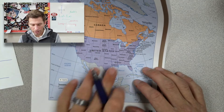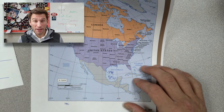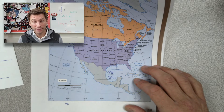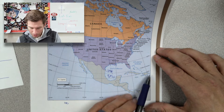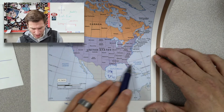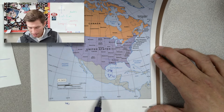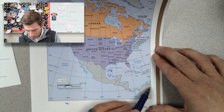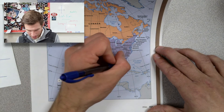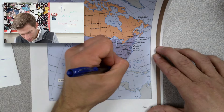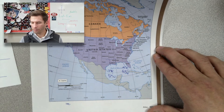Now let's go the other direction — start with coordinates and find the location. Take 28 degrees north and 82 degrees west. Our lines of latitude are 10, 20, 30, so 28 is just under 30 degrees north. At the bottom of the map we have 80, 90, 100, and also 70 — so 82 is just past 80 going west. Bringing those two lines together, we find Florida at roughly 28 degrees north and 82 degrees west.